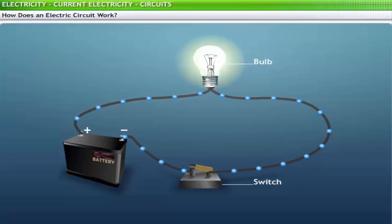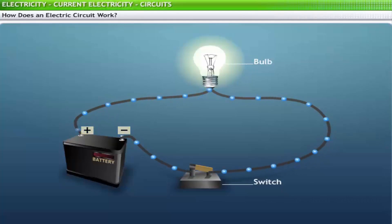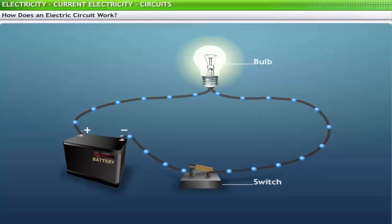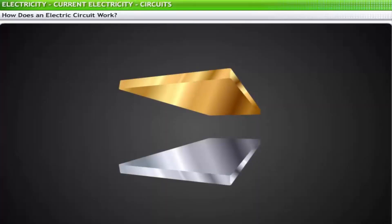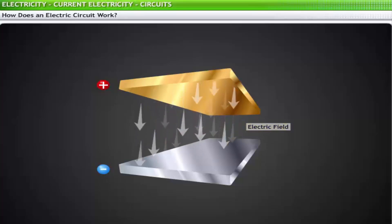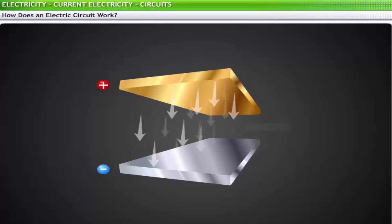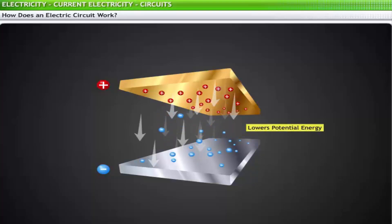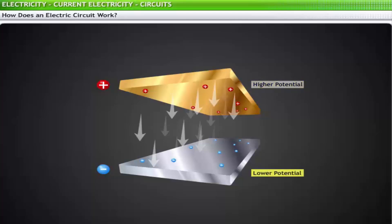The electric current in a circuit is due to potential difference between two terminals of the battery. To illustrate the concept, consider two metal plates positioned parallel to each other, each carrying an opposite charge — one positive and one negative. This arrangement creates an electric field directed away from the positive plate and towards the negative plate. A negative charge from the negatively charged plate moves naturally towards the positive plate, lowering its potential energy. The positive plate is at higher potential and the negative plate is at lower potential, so there is a difference in electric potential between the two locations.